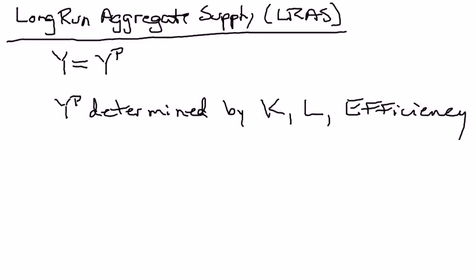I'm going to abbreviate potential GDP with Y^P — Y to stand for GDP, with a P in the superscript to indicate it's potential — a particular level of output. So the key point is that in the long run, we think GDP is going to be equal to potential, and we'll talk later about reasons why GDP gets pushed to potential in the long run.